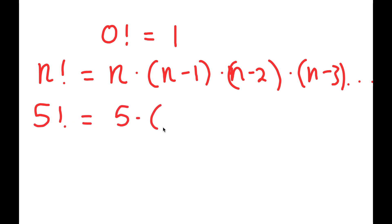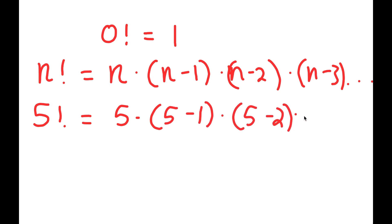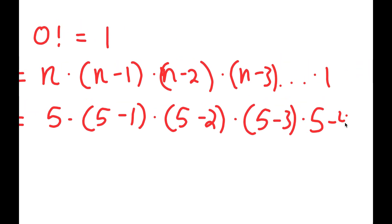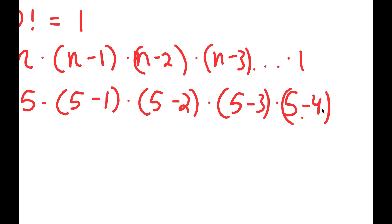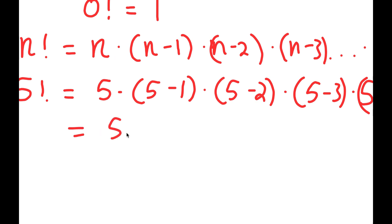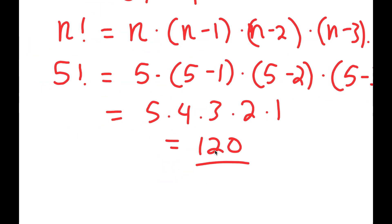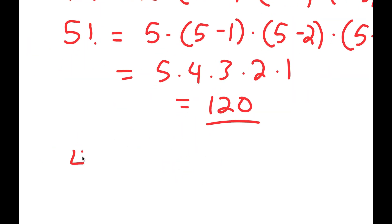For 5 factorial, this is equal to 5 times 5 minus 1 times 5 minus 2 times 5 minus 3 times 5 minus 4, and 5 minus 4 is 1, so that's where we reach our stopping point. This is equal to 5 times 4 times 3 times 2 times 1, which is 20 times 3, which is 60, times 2, which is 120.